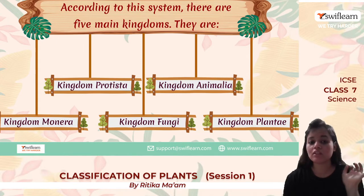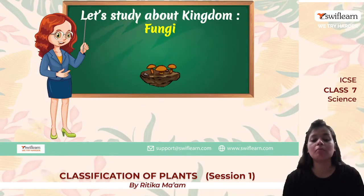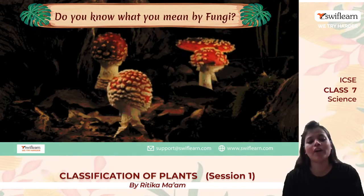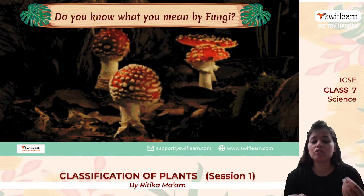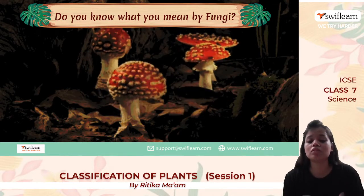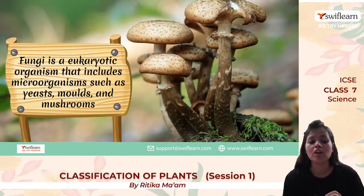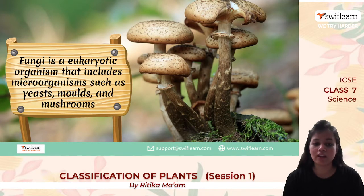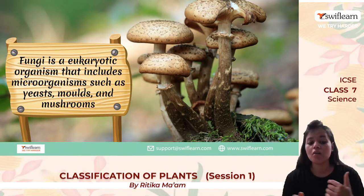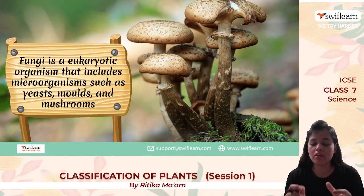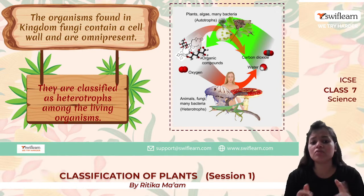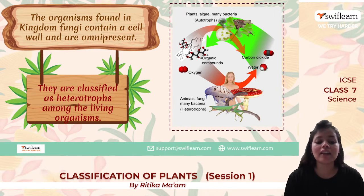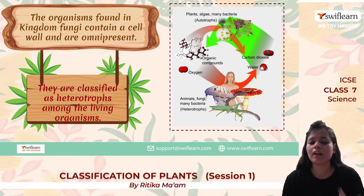We classify organisms into five kingdoms: kingdom Monera, kingdom Protista, kingdom Fungi, kingdom Animalia, and kingdom Plantae. Today we are going to study about kingdom Fungi. Fungi — I hope everyone has at least once seen it on stale bread mold. On a bread loaf kept in the open for three to four days, some fungi grow. Fungi is a eukaryotic organism that includes microorganisms such as yeast, molds, and mushrooms. Eukaryotic means their nucleus has a membrane. Fungi have a cell wall and are omnipresent.